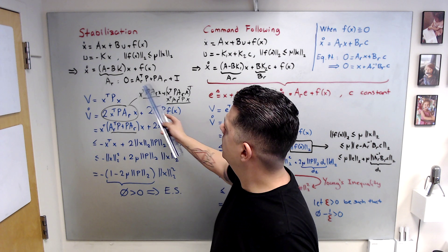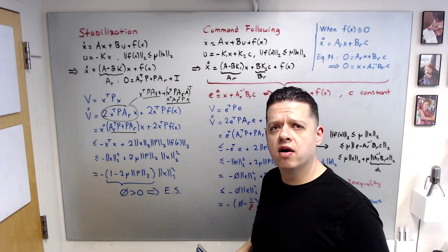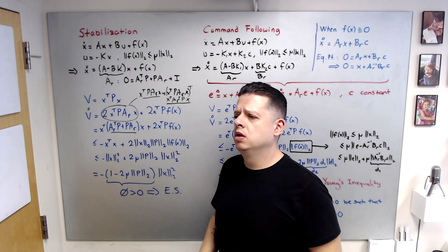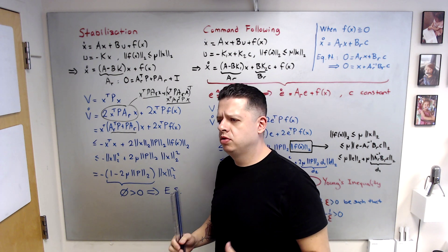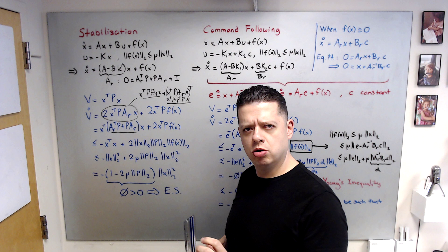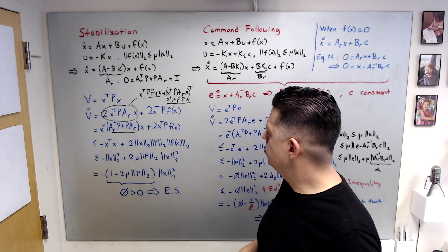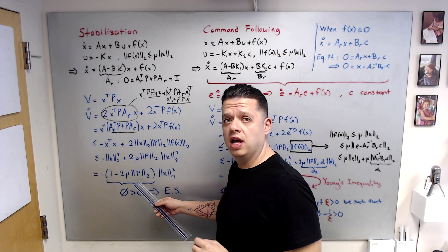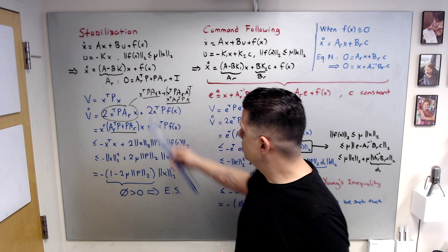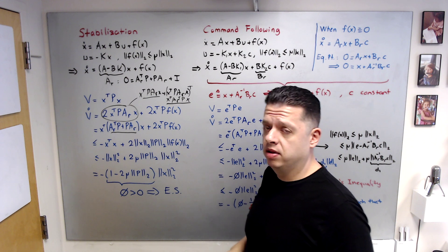For a given uncertainty bound, by placing eigenvalues further left or using optimal strategies to minimize the 2-norm of P, you may satisfy this condition. Once you satisfy it, in the presence of uncertainty you still get exponential stability.